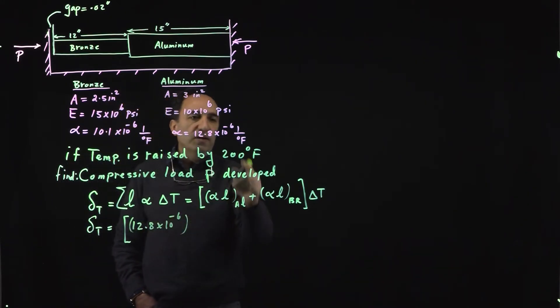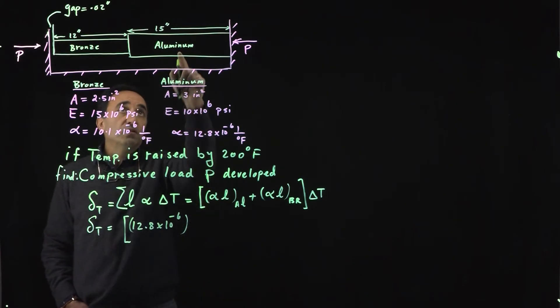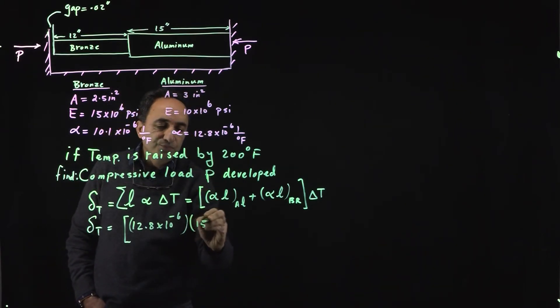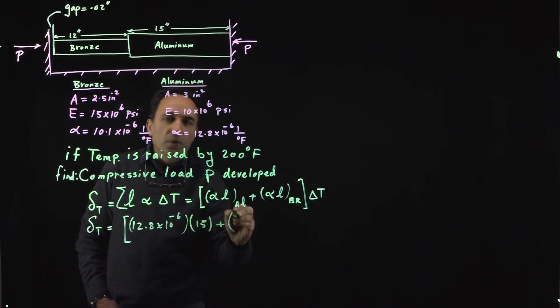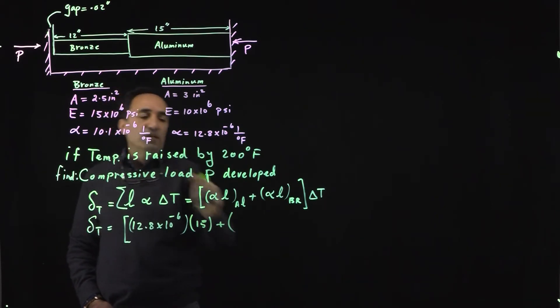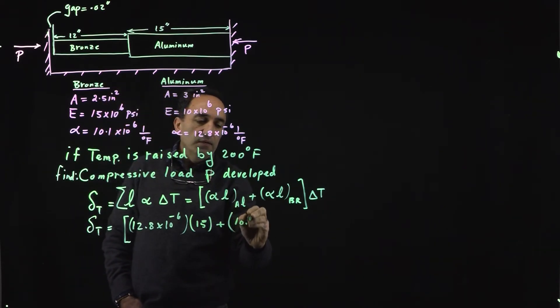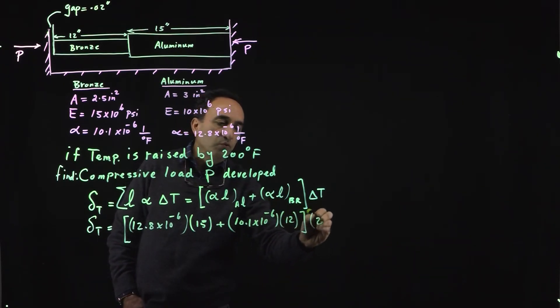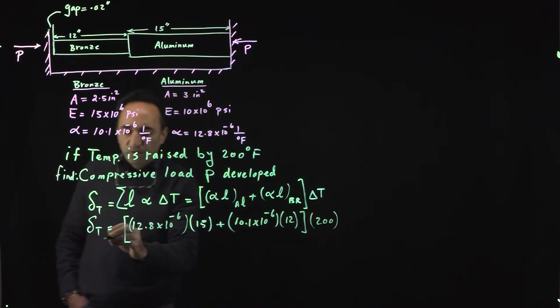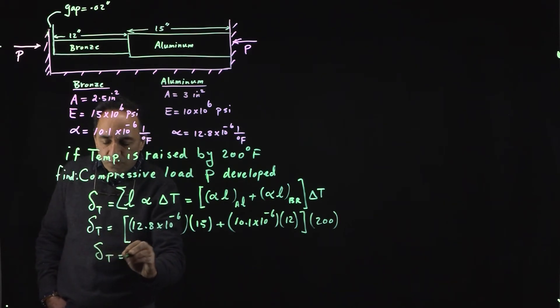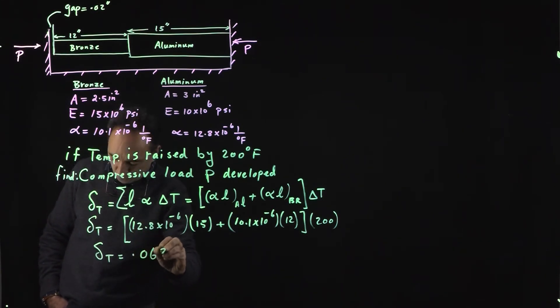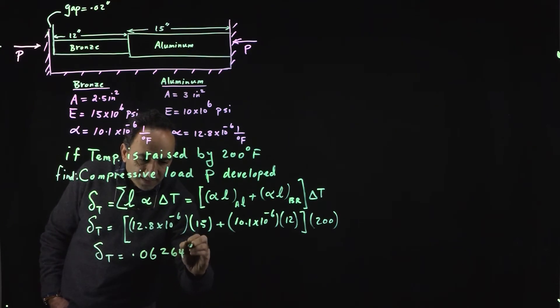Alpha for the aluminum as you could see here is 12.8 times 10 to the negative 6, unit is consistent per degree Fahrenheit, times the length of 15 inches. For the bronze, alpha is 10.1 times 10 to the negative 6 times the length which is 12 inches, and of course temperature of 200 degrees Fahrenheit. If you do the calculation this should come out to be about 0.0624 inches to be exact.